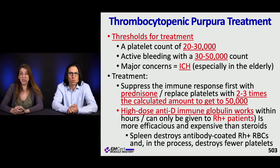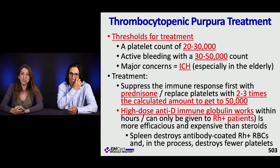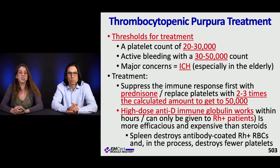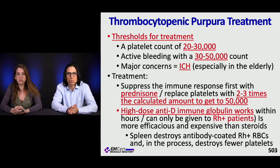Some adults with ITP are chronically dependent on platelet transfusion and may need steroids or immunomodulators long-term. Treatment is indicated when the platelet count is less than 30,000, with active bleeding at 30,000 to 50,000, or if there's concern for intracerebral hemorrhage especially in elderly patients. First-line treatment is steroids to suppress the immune response. High-dose anti-D immune globulin can work within hours and is more efficacious but more expensive — it can only be given to Rh-positive patients.